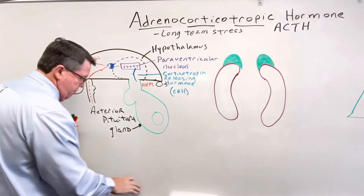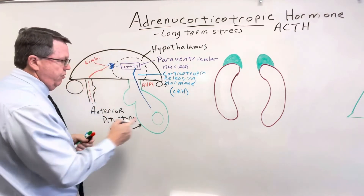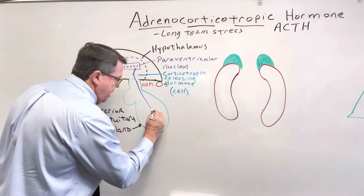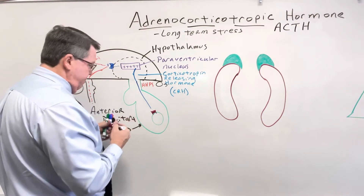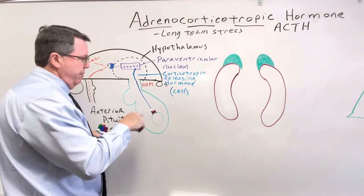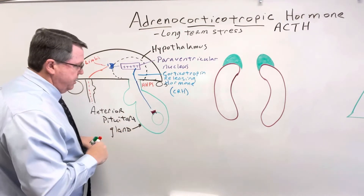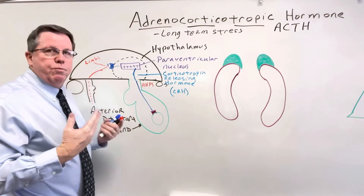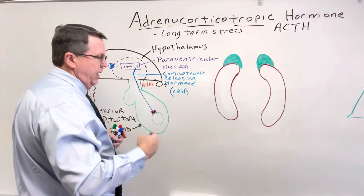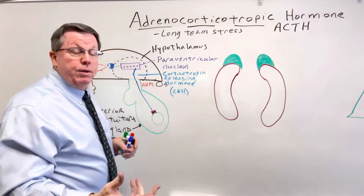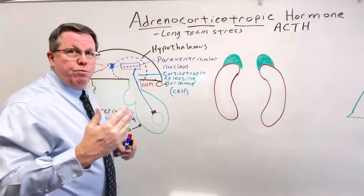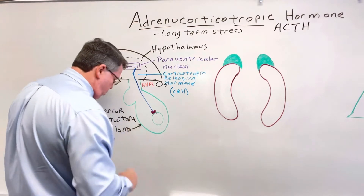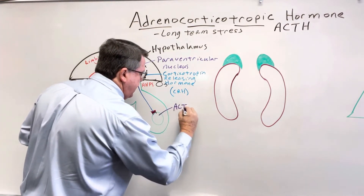Here comes my corticotropin-releasing hormone. On this cell, we are going to have a receptor — this is actually a 7-transmembrane receptor. CRH is going to hit this receptor, which is going to activate a G-stimulatory protein, which is then going to activate adenylate cyclase, which is then going to cause ATP to become cyclic AMP. The cyclic AMP is going to activate protein kinase A, which is going to do phosphorylation, and we are going to end up with our hormone called ACTH being released.